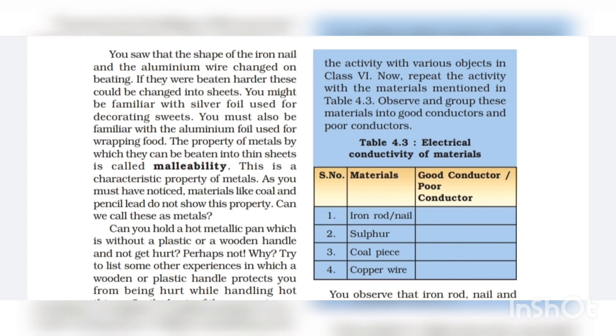So you should know the definition of malleability. It is very important for the exam. This is a characteristic property of metals. This is also very important. As you must have noticed, materials like coal and pencil lead do not show this property. Can we call these as metals?